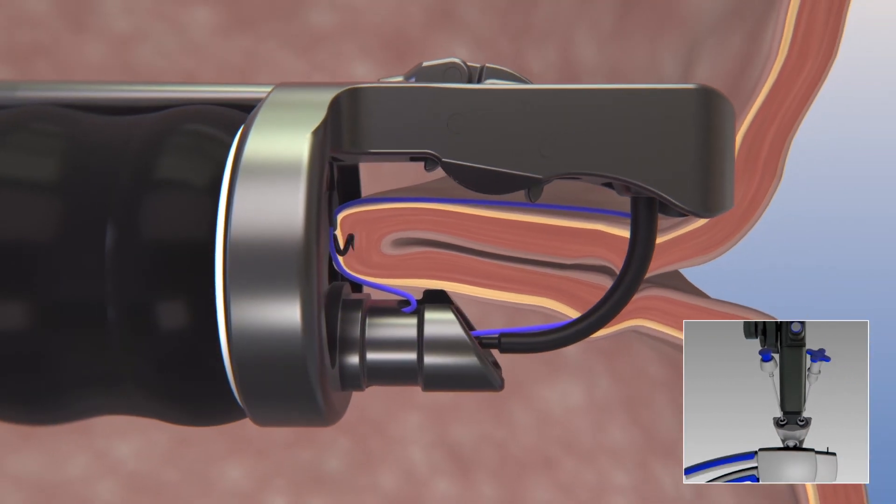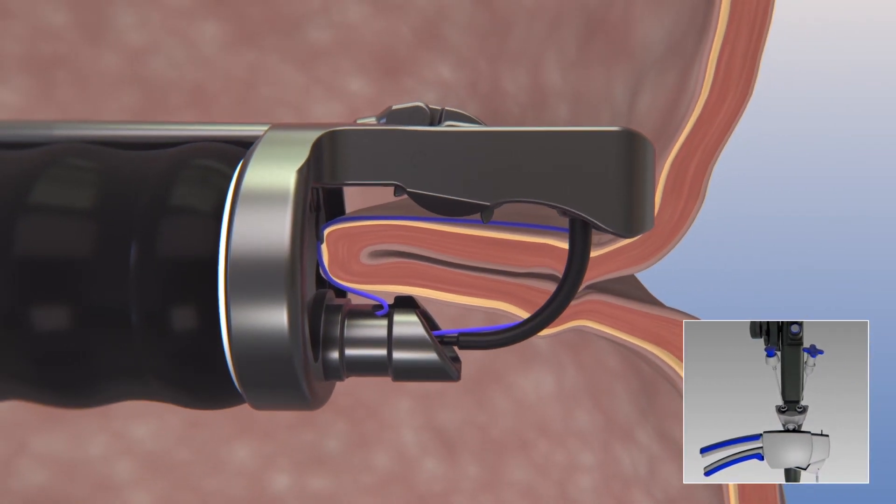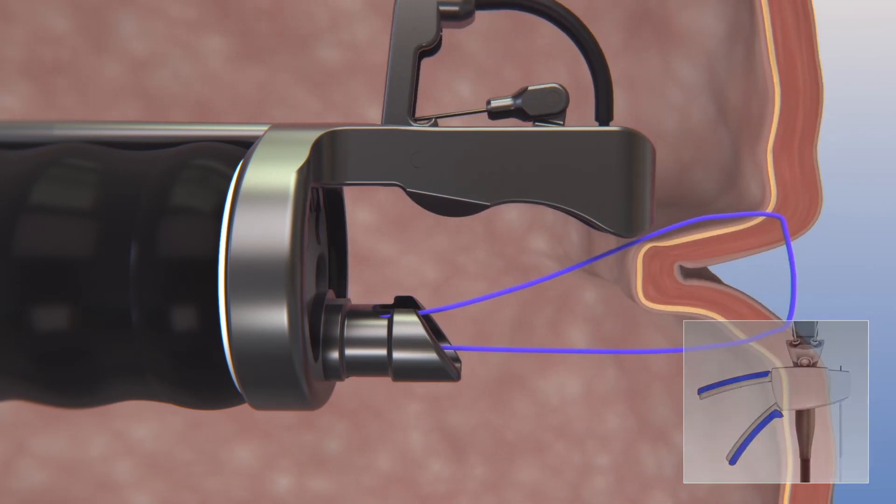Turn the tissue helix counterclockwise to release from the tissue. Pull the blue cross button to retract the helix. Finally, open the overstitch handle.